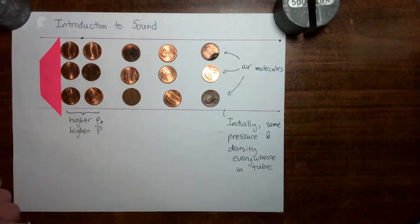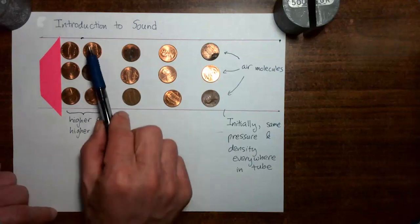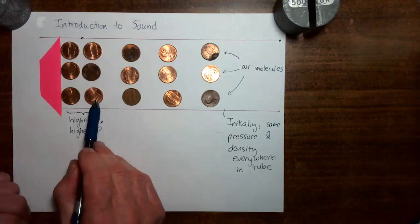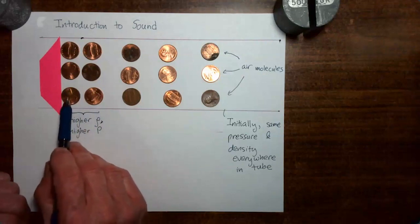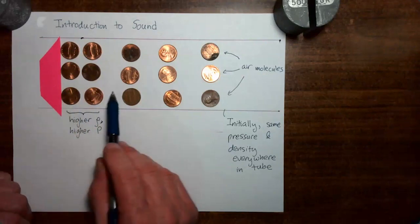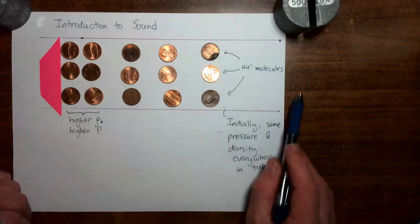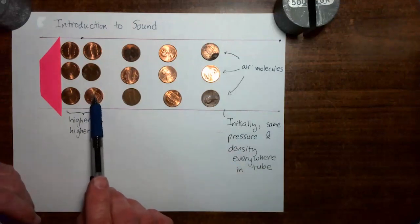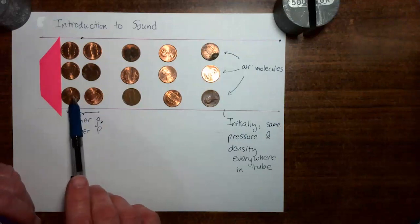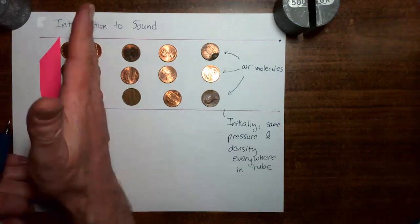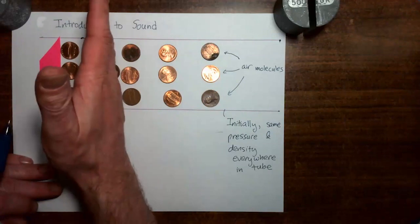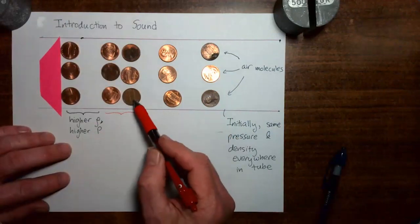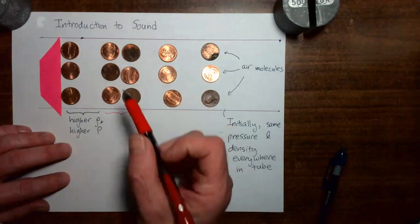So what happens next? Now look at this second group of air molecules. The second group of air molecules experiences higher pressure on its left, but just the normal ambient pressure on its right. So what's going to happen? The higher pressure on the left is going to push this group to the right. And now our region of high density and high pressure is over here.